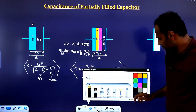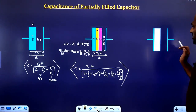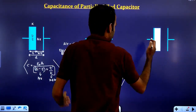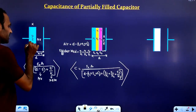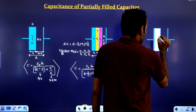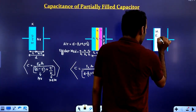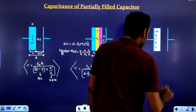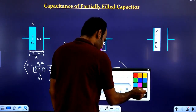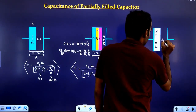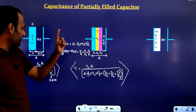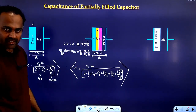In the next case, I am taking one more case. This is also a partially filled capacitor, but here instead of a dielectric medium we are inserting a metal slab of thickness T. There is an air gap on either side of the metal, so this is a partially filled capacitor.